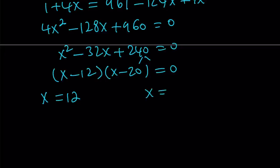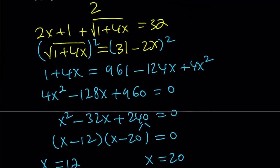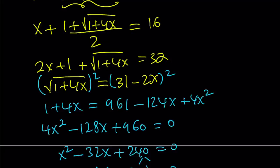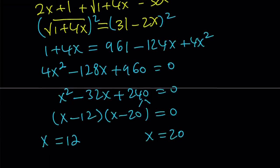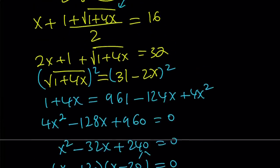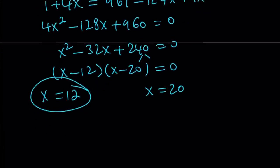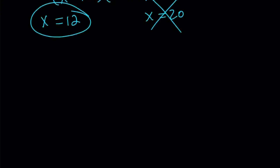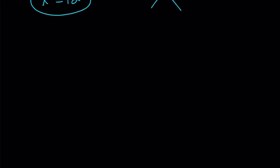So, x equals 12 and x equals 20. Now, if you go back and substitute 12 here into this equation, you're going to notice that 4 times 12 is 48, square root of 49 is 7, 7 plus 1 is 8, 8 divided by 2 equals 4, 12 plus 4 equals 16. So, x equals 12 works. But unfortunately, 20 doesn't because 20 times 4 is 80, 81, you get 9, 1 plus 9 is 10, 10 divided by 2 is 5, 5 plus 20 is 25. Unfortunately, x equals 20 does not satisfy the radical equation. Therefore, we have to reject that solution.